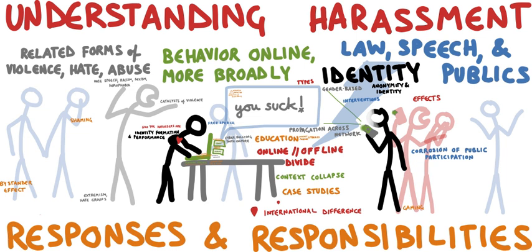Beginners could benefit from older hackers' knowledge and advice. Furthermore, hacking is cheaper than ever before the cloud computing era. In order to spam or scam one needed a dedicated server, skills in server management, network configuration, and maintenance, knowledge of internet service provider standards, etc. By comparison, a mail software as a service is a scalable, inexpensive, bulk, and transactional email sending service for marketing purposes and could be easily set up for spam. Jean-Lou Richet explains that cloud computing could be helpful for a cybercriminal as a way to leverage his attack, brute-forcing a password, improve the reach of a botnet, or facilitating a spamming campaign.